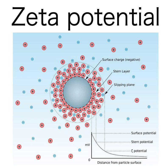The zeta potential is an important and readily measurable indicator of the stability of colloidal dispersions. The magnitude of the zeta potential indicates the degree of electrostatic repulsion between adjacent, similarly charged particles in a dispersion. For molecules and particles that are small enough, a high zeta potential will confer stability, i.e., the solution or dispersion will resist aggregation.